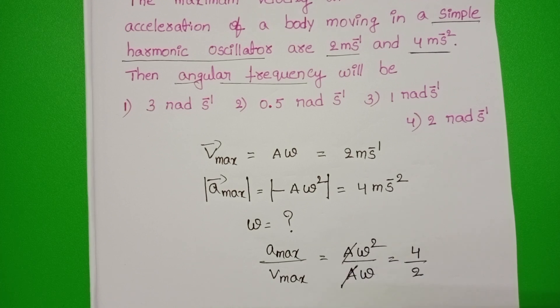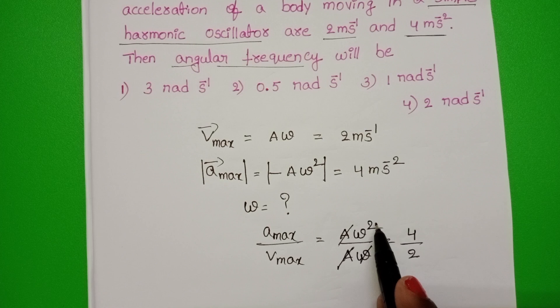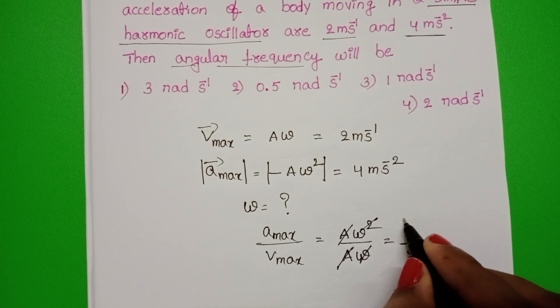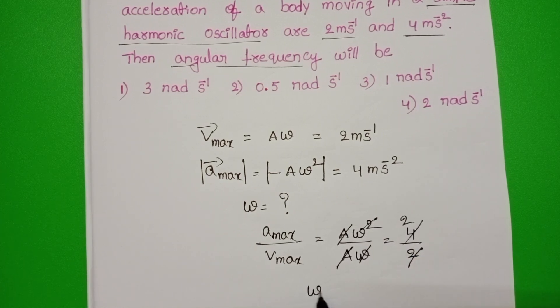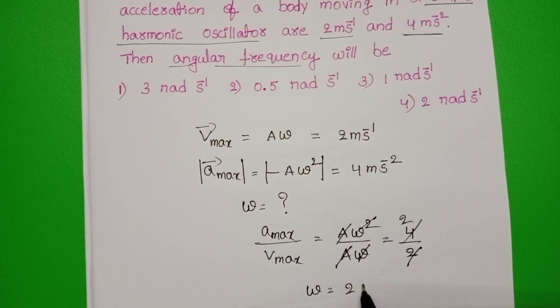Here amplitude get cancelled and one omega also get cancelled. Two ones, two twos. Angular frequency is equals to 2 radian per second.